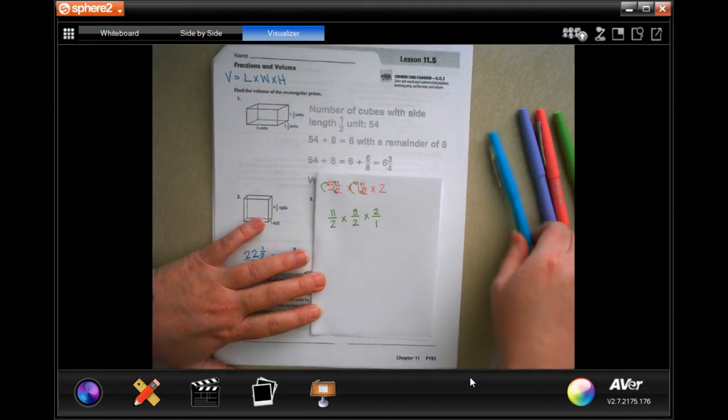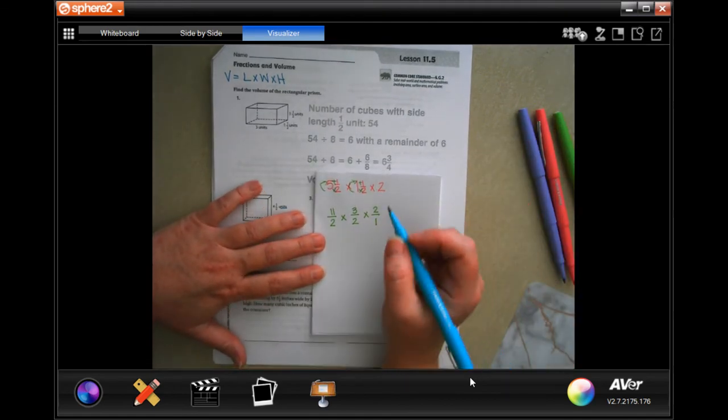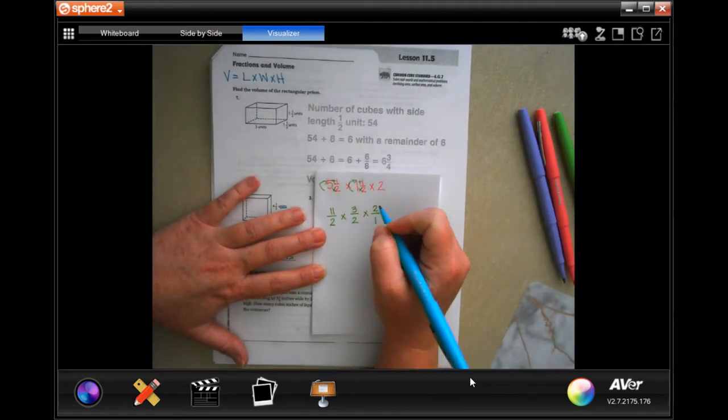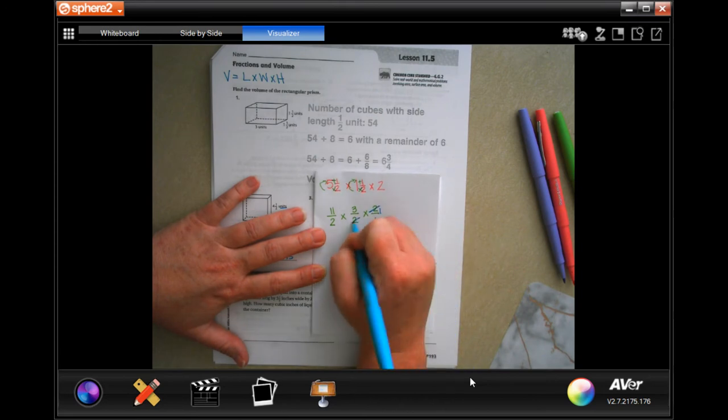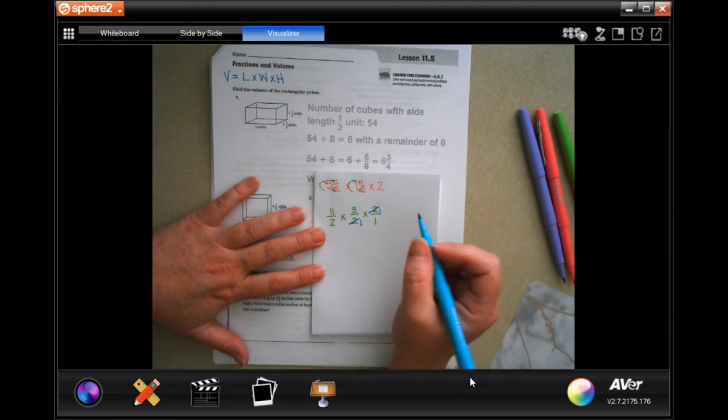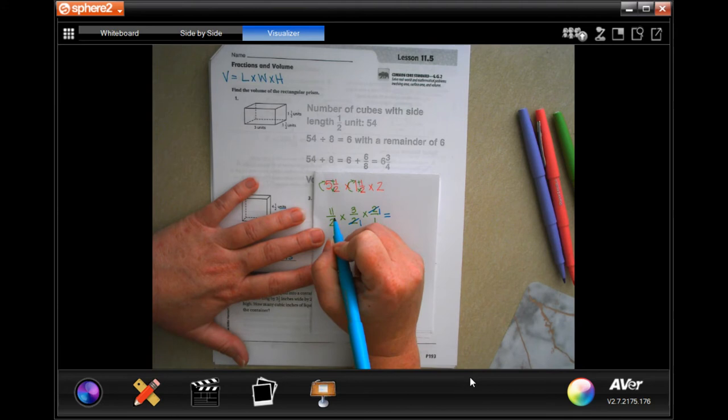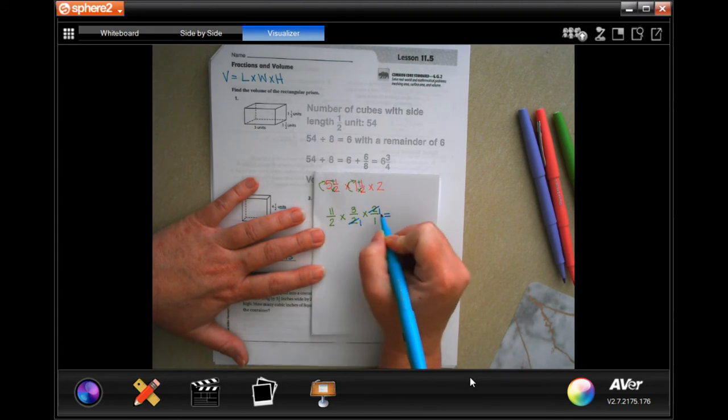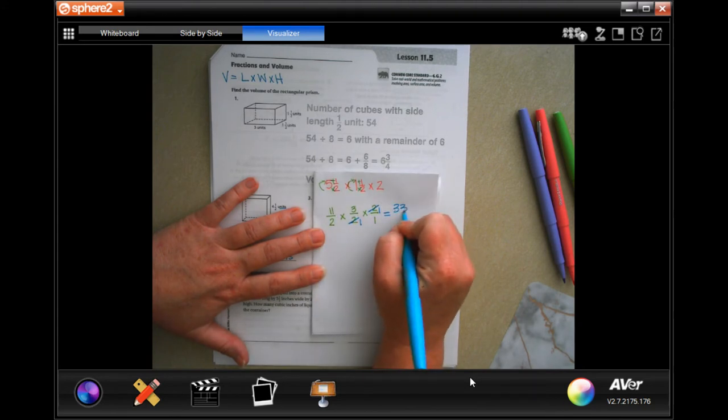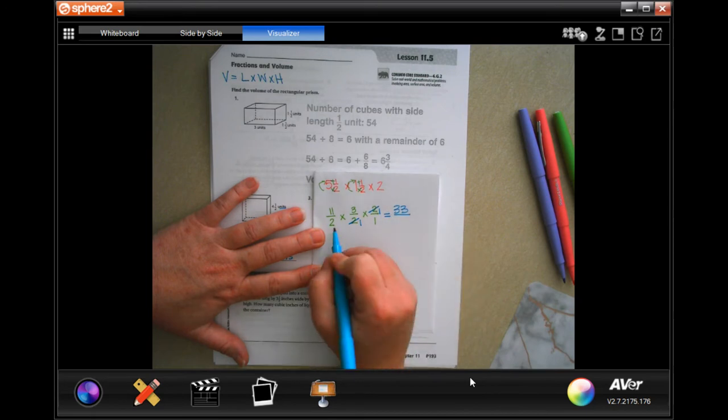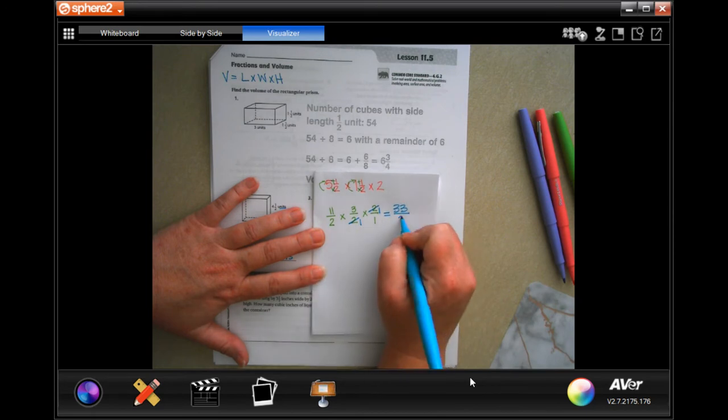Now, the cool thing about this is you can absolutely cancel, cross-cancel. Well, 2 goes into 2 1s, and 2 goes into 2 1s. That's going to be the only thing that I have the ability to cancel, but it still makes it a little bit easier to multiply straight across. So, 11 times 3 is 33, times 1 is still 33. 2 times 1 times 1 is still 2.